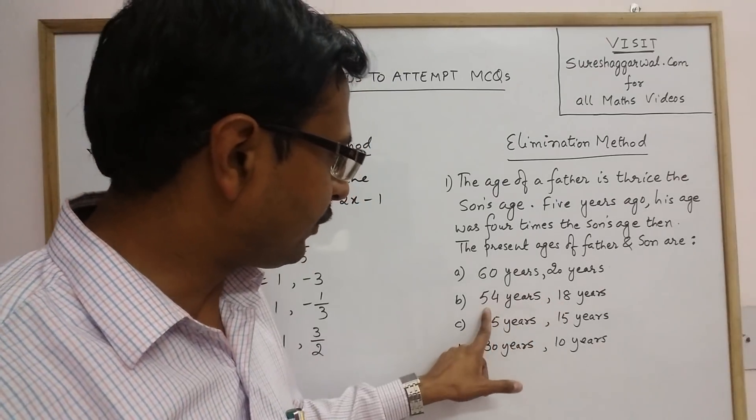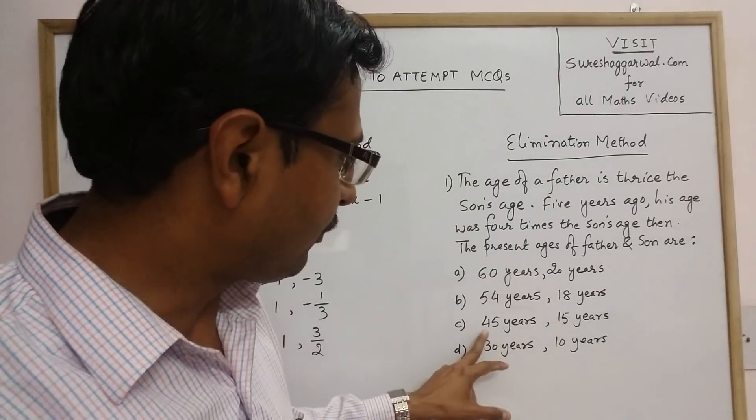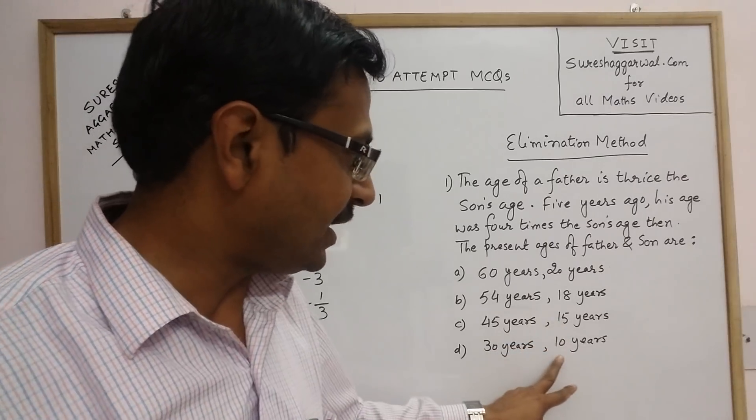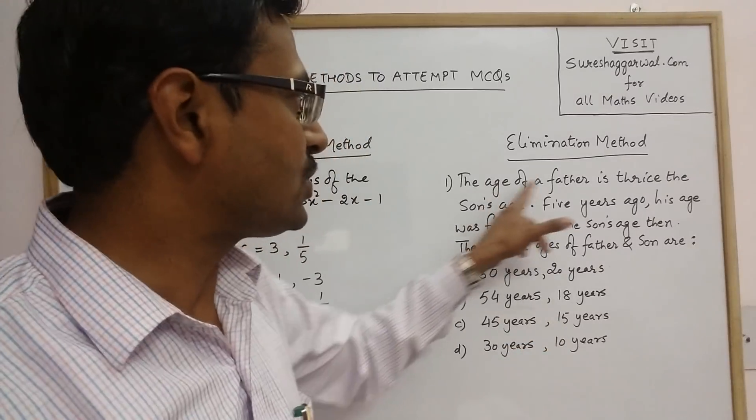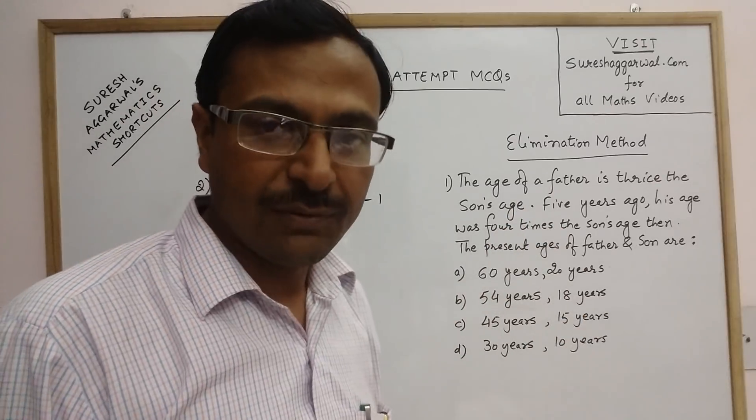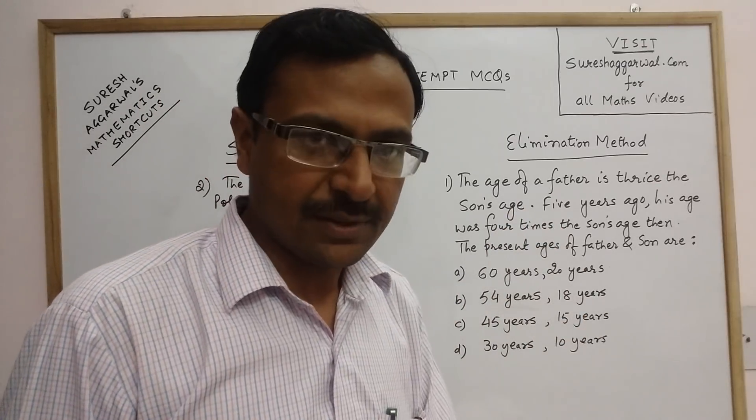But it is not that easy because in all other options also, 54 and 18, 54 is three times 18. 45 is three times 15 and 30 is three times 10. So, the first equation does not give you any particular answer.